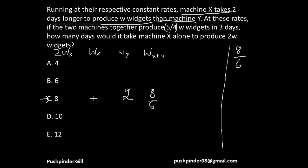So that's pretty much established. We have done that in the first video—if X takes this many days, Y takes this many days, then together they're gonna take this many days. Now in the question it says they take three days to produce 5/4 W widgets. So let's go ahead and check whether option C is right or not.